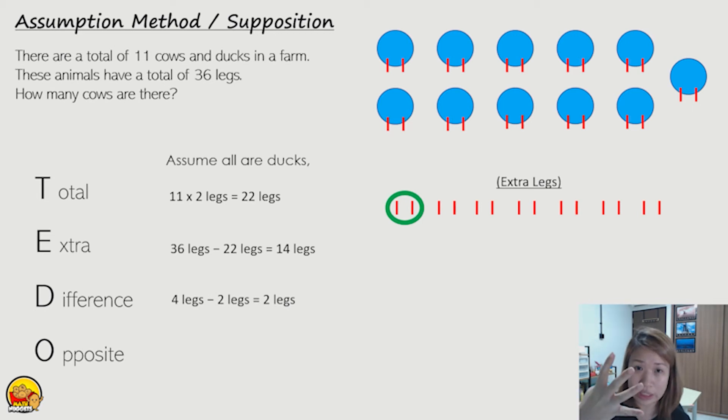What do I mean by the difference? Now one cow, four legs, one duck, two legs. The difference is we subtract. So the difference between one cow and one duck will be two legs.